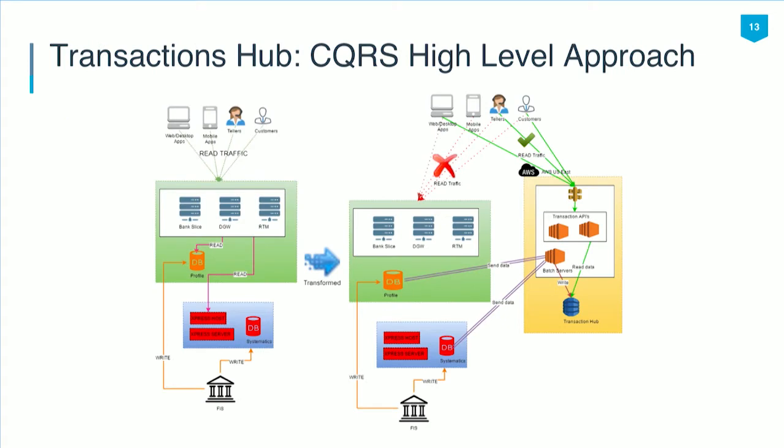We chose a very industry-tried technique: the CQRS pattern. That is our high-level approach for focusing on read traffic. On the left-hand side of the architecture diagram, both reads and writes were happening to the mainframe system. On the right-hand side, we have taken an approach where all read traffic is segregated to the new cloud infrastructure, through which transactional data gets served to the various channels.